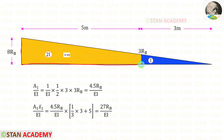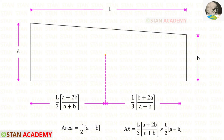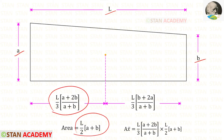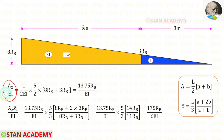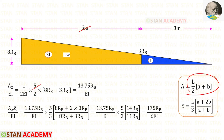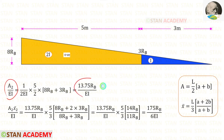Now let us take this trapezoid and keep it as number 2. For a trapezoid with left height a, right height b, and span l: the area formula is (l/2)(a+b) and the centroid distance to the left is (l/3)×(2a+b)/(a+b). For Area 2, the moment of inertia is 2I so we use 2EI. With l=5, a=8Rb, b=3Rb, we get Area 2 upon EI = 13.75Rb upon EI.